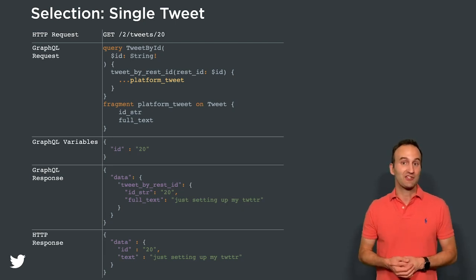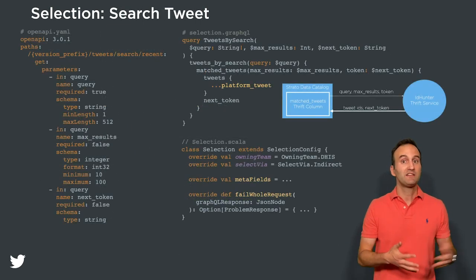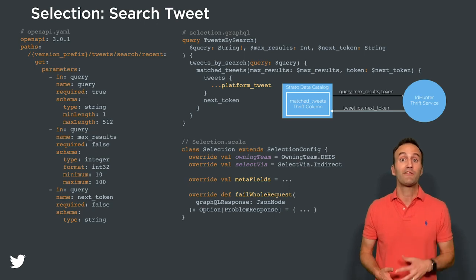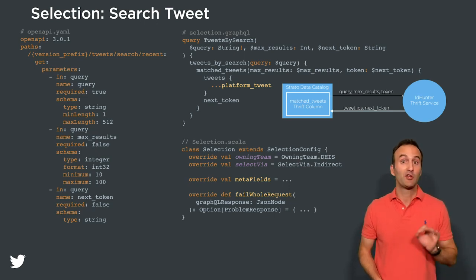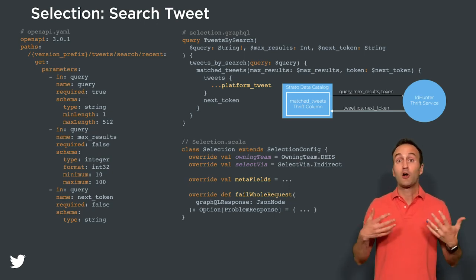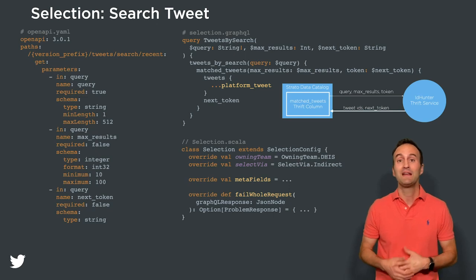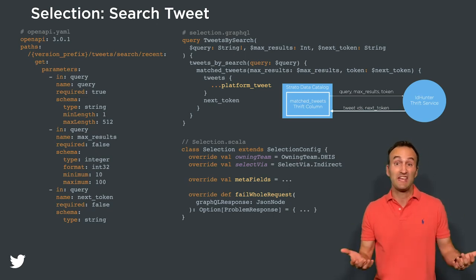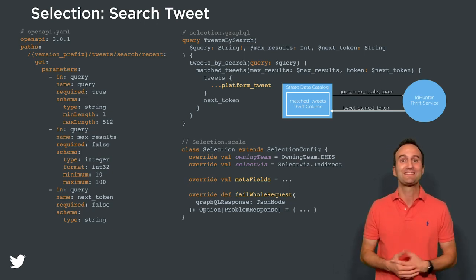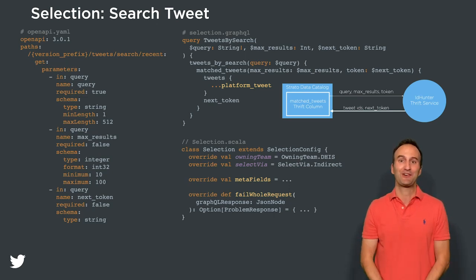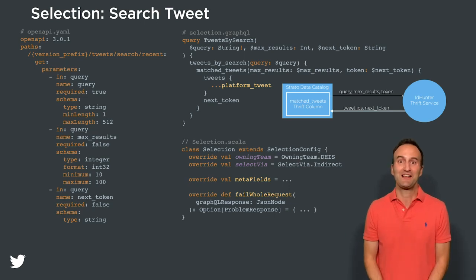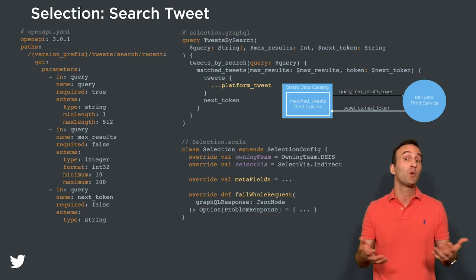Next, we need to create a selection for retrieving tweets by search. Similar to tweet lookup by ID, we define an openapi.yaml file, this time containing additional typed and schema-validated query params. selection.graphql is where we search for tweets using a search query, and the place where the platform tweet fragment is put in the query is where we expect tweets to be returned. Our GraphQL schema is based on our Strato data catalog system, so when we query for the match_tweets GraphQL field, it's actually implemented as a Thrift service named ID Hunter, which takes a search query string, num_results, and a token as input and returns match tweet IDs and a cursor as output. Finally, we have a selection.scala file with an optional fail_whole_request method defined to produce more detailed HTTP 400 responses based on what our Thrift service returns.